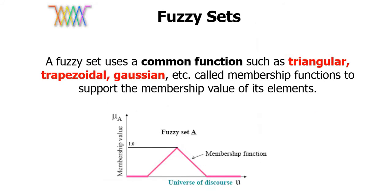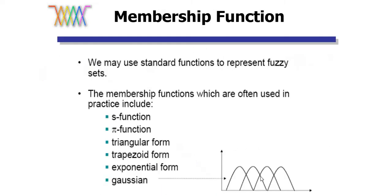Fuzzy set uses common functions such as triangular, trapezoidal, and Gaussian. We may use standard functions to represent fuzzy sets. Membership functions often used in practice include S function, pi function, triangular form, trapezoid form, exponential form, or Gaussian. It depends on the behavior of our input and output.